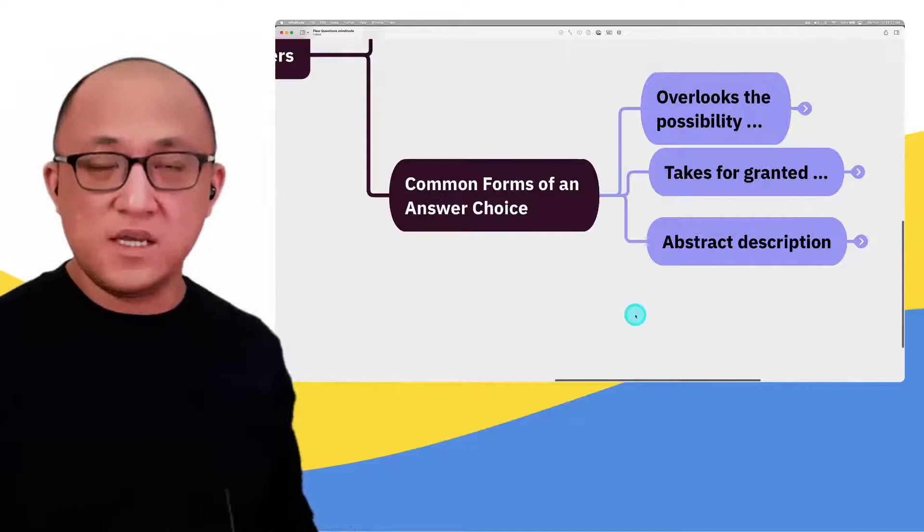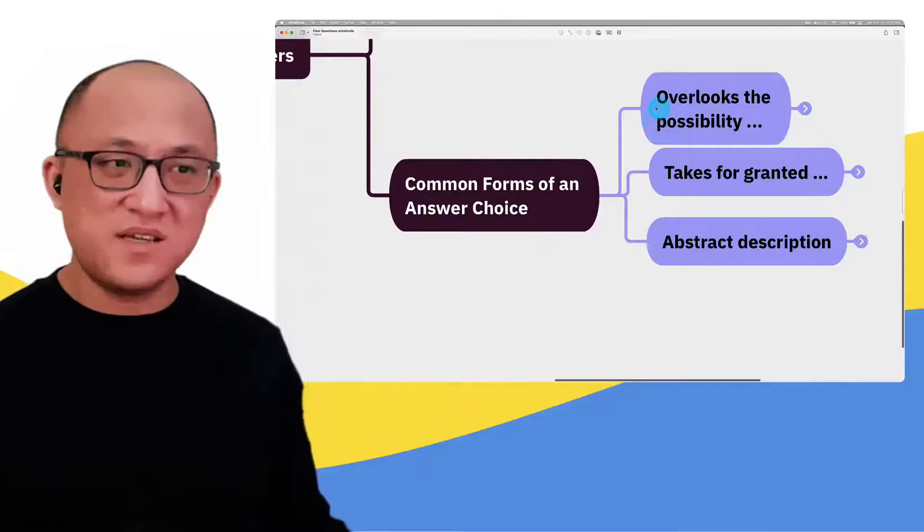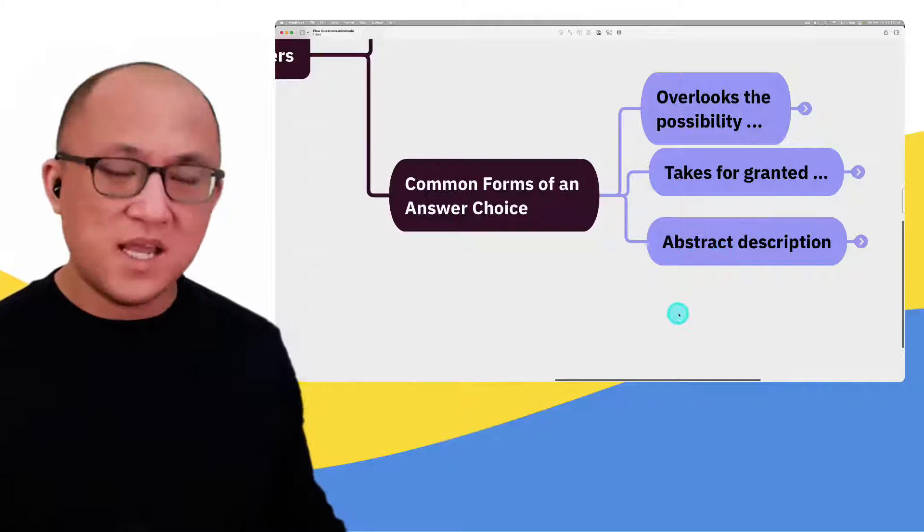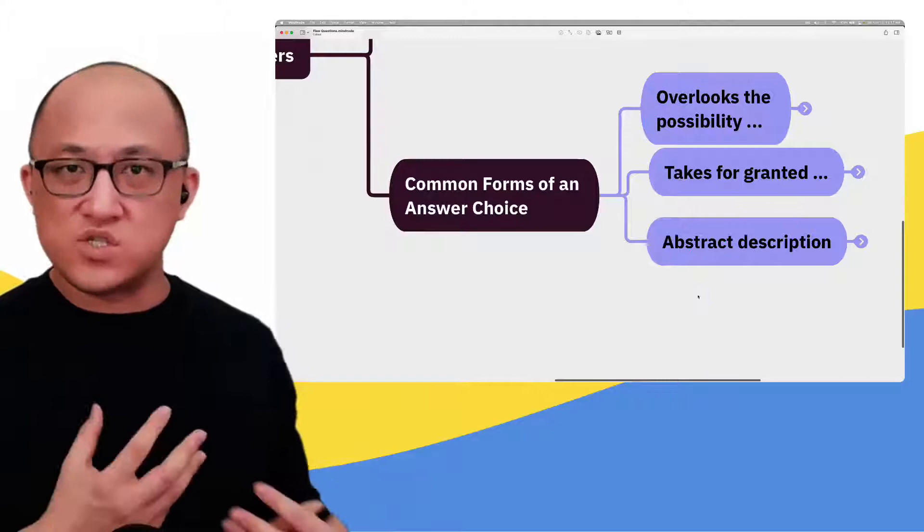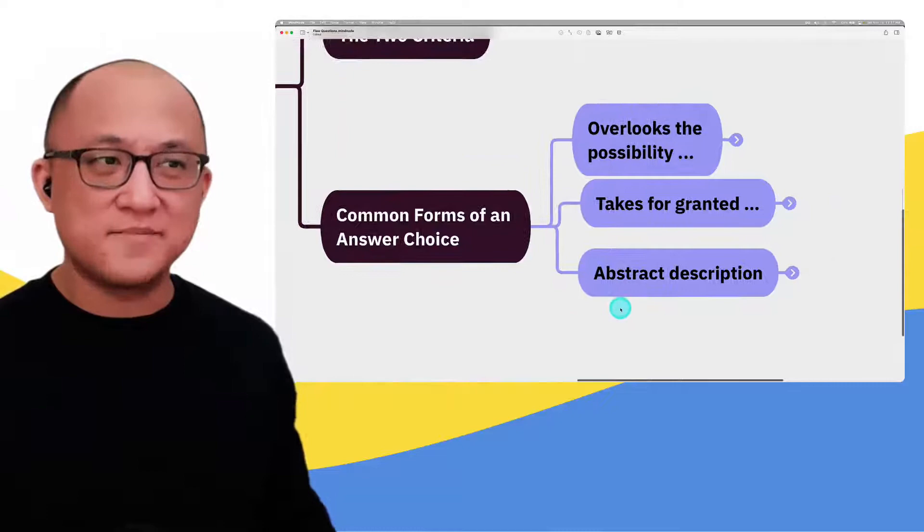Generally speaking, these are the three kinds of answers you're going to see in flaw questions: ones that say the argument's overlooking something, assuming or taking something for granted, or it's trying to describe what the argument does. Depending on the kind of answer choice, that lends itself to a certain kind of analysis.